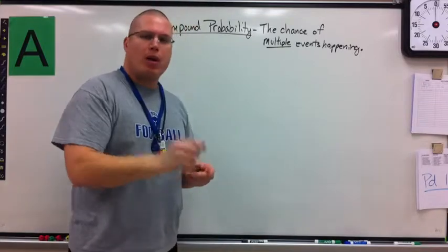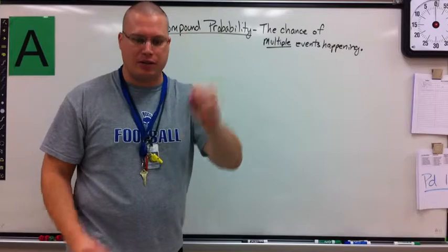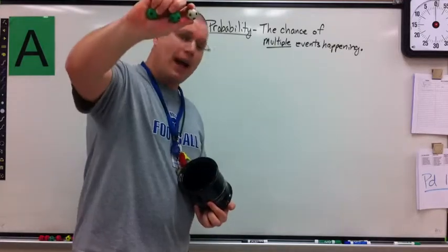If I would do these separately, we would know. The chance of a red is one-half. The chance of a two is one out of six. The chance of a white is one out of three.